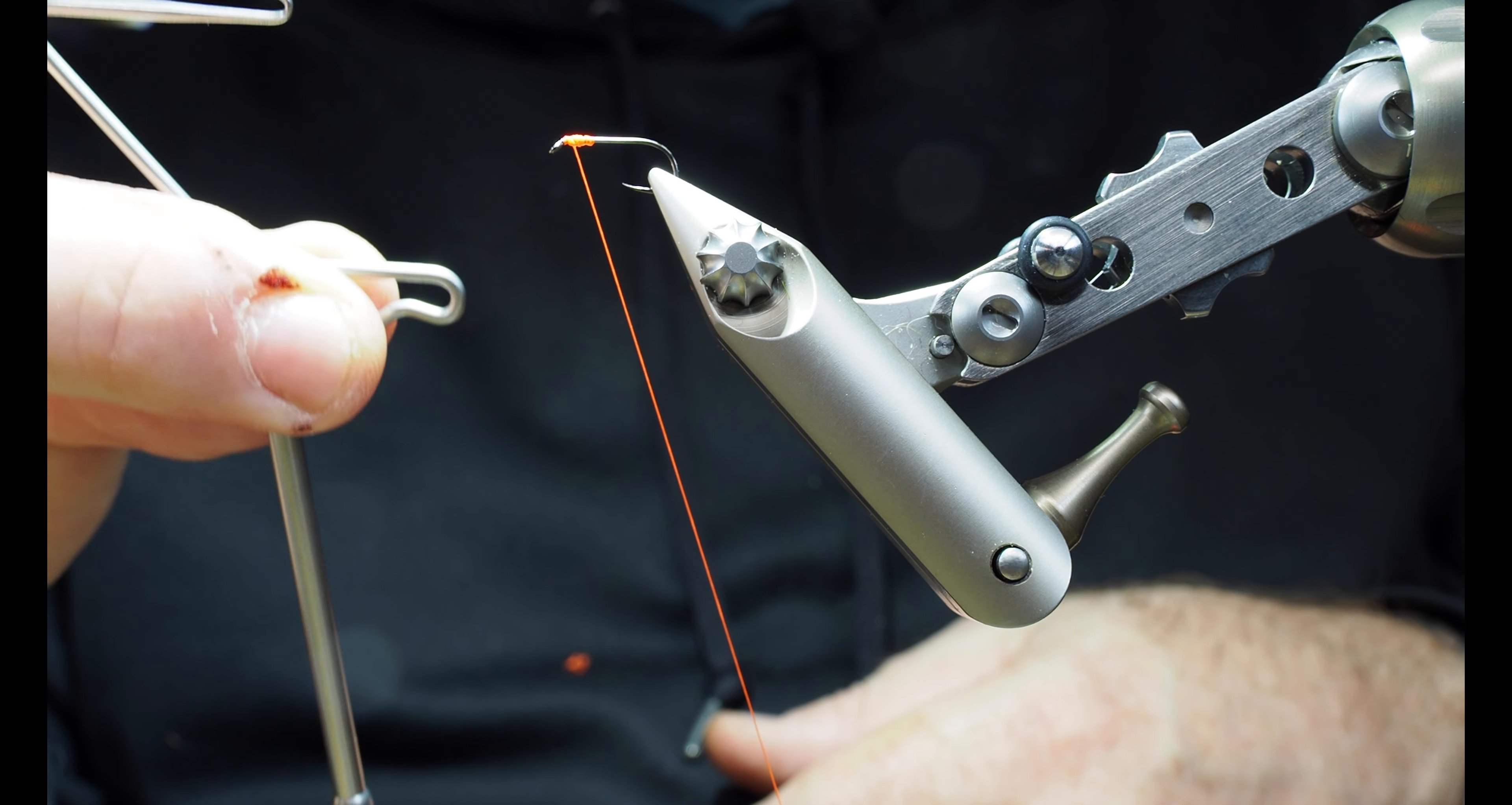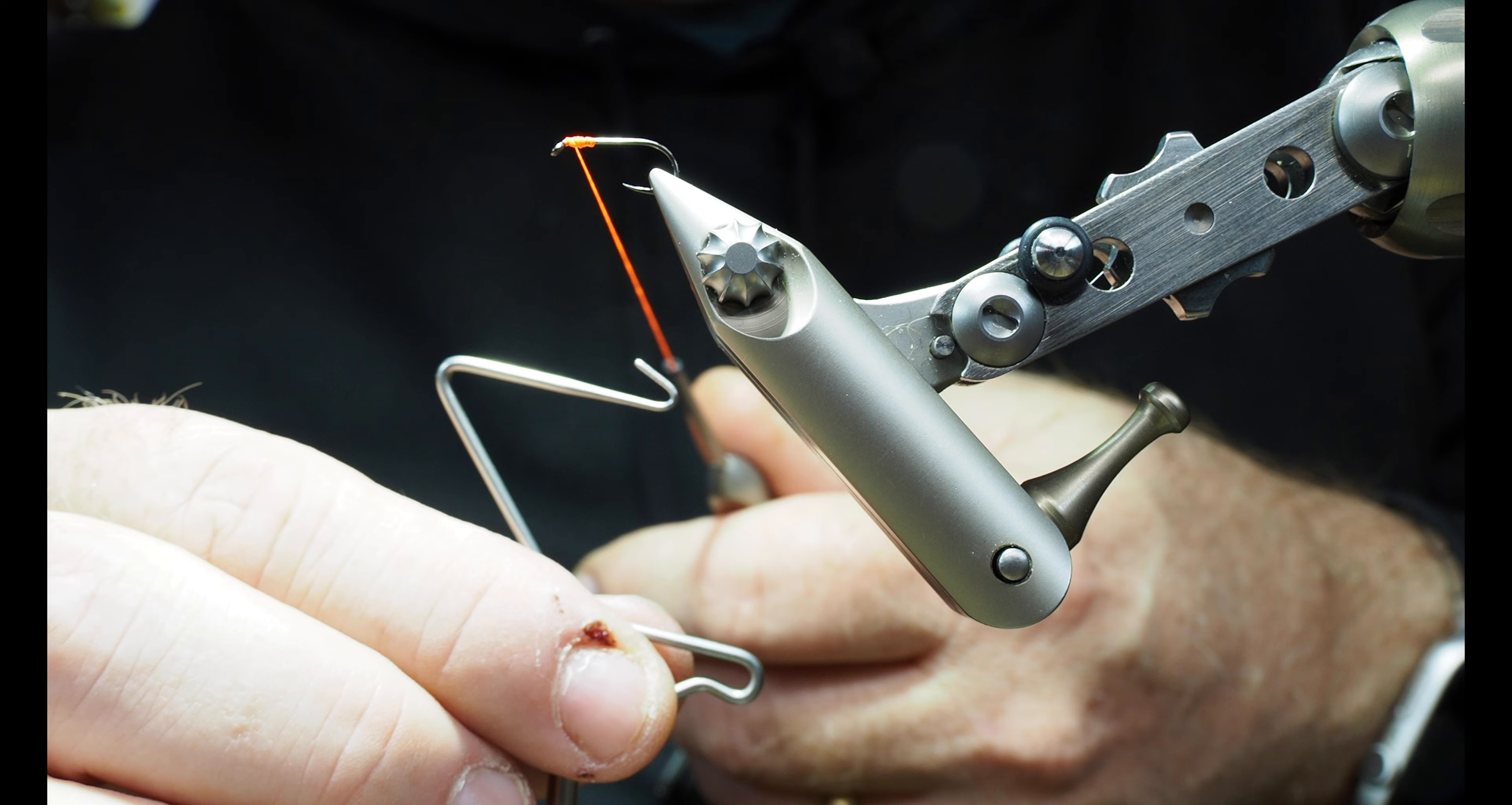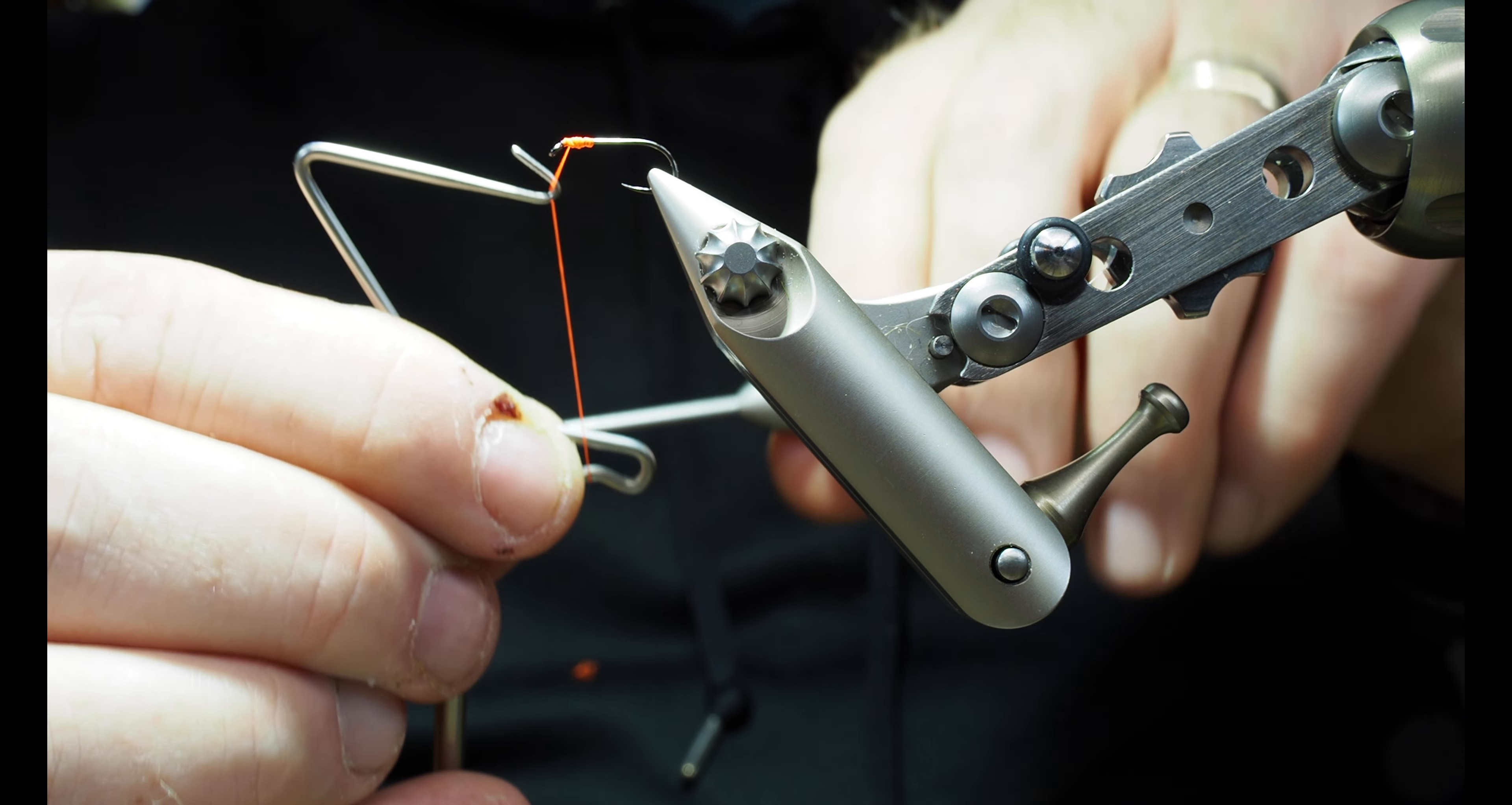So when I'm doing my whip finishing on a fly, I'm usually holding it right about there. I just have it pinched between my thumb and forefinger. I've got that hook facing this direction. And I take my thread and my bobbin, and it's kind of down on an angle here, so hopefully you can see it. And I'm just going to hook that top hook on my thread.